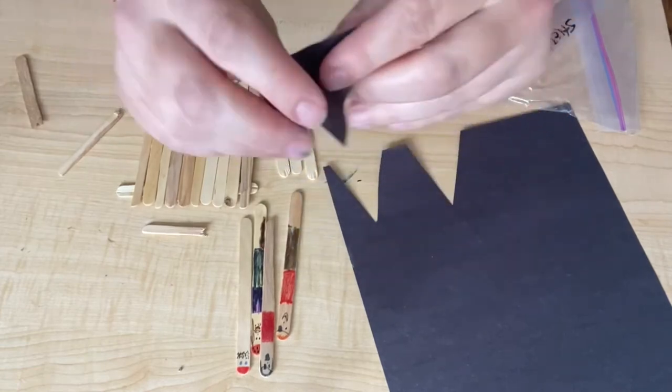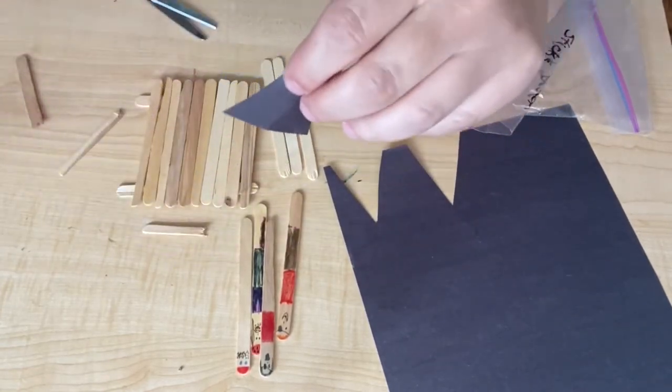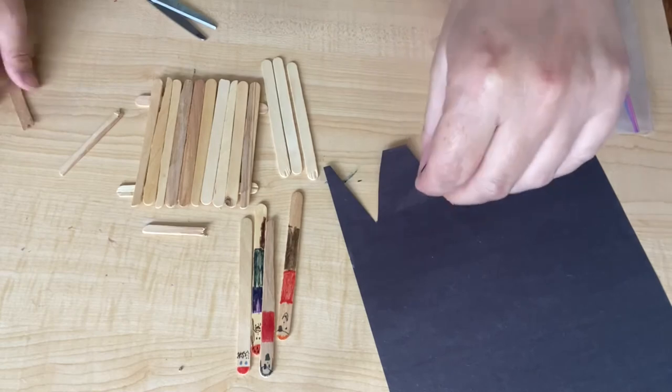And so I've got my sail. It's got some holes in it so that we can slide it onto our craft stick.